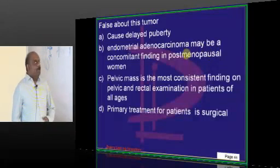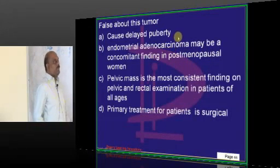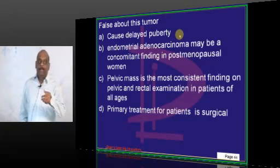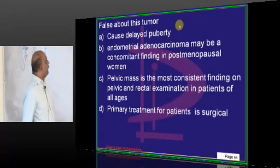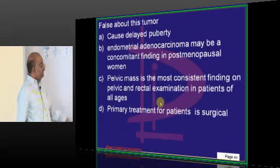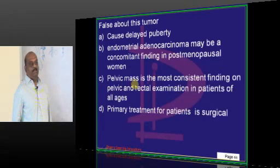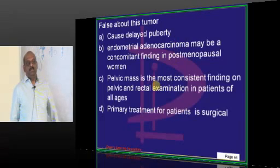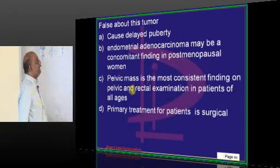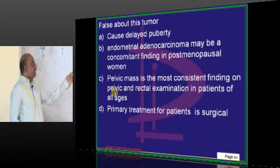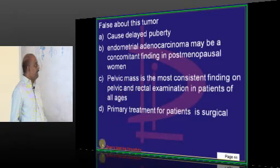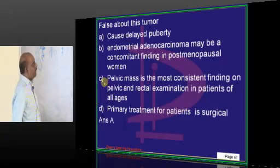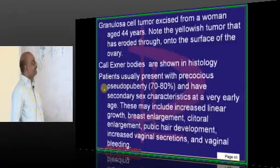Granulosa cell tumor produces estrogen. Hence, whenever it occurs in young girls, it leads to precocious puberty, not delayed puberty. And whenever it occurs in postmenopausal women, it presents with endometrial adenocarcinoma because high estrogen produced by it leads to development of endometrial adenocarcinoma. There will be a pelvic mass on examination and the main treatment for this is surgical. That is the story on Call-Exner bodies and ovarian carcinoma.